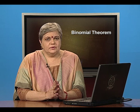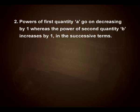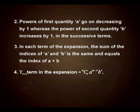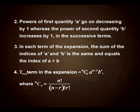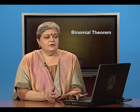Some observations about binomial theorem: binomial theorem tells us that every time you expand (a + b)^n the total number of terms is n+1. The power of the first quantity decreases and the power of the second quantity increases in each successive term. The total power of a and b is always equal to the index of the expansion. The general term T(r+1) is given by nCr·a^(n−r)·b^r, where nCr = n!/[(n−r)!·r!]. With these significant facts, we are ready — let us start with our first question.